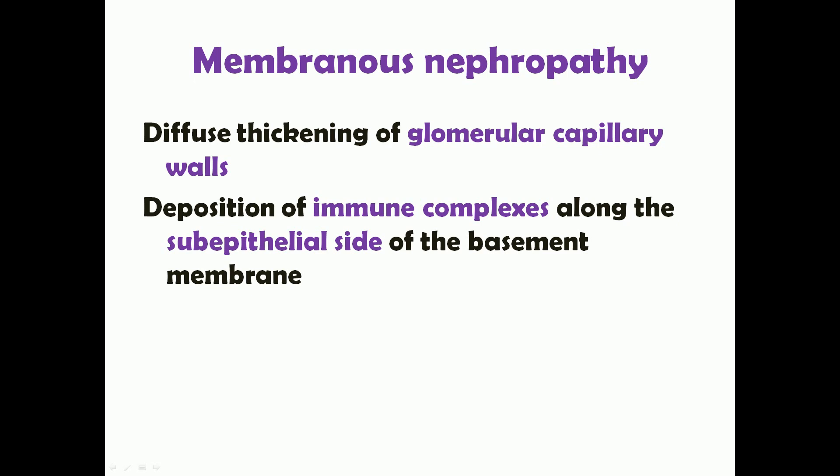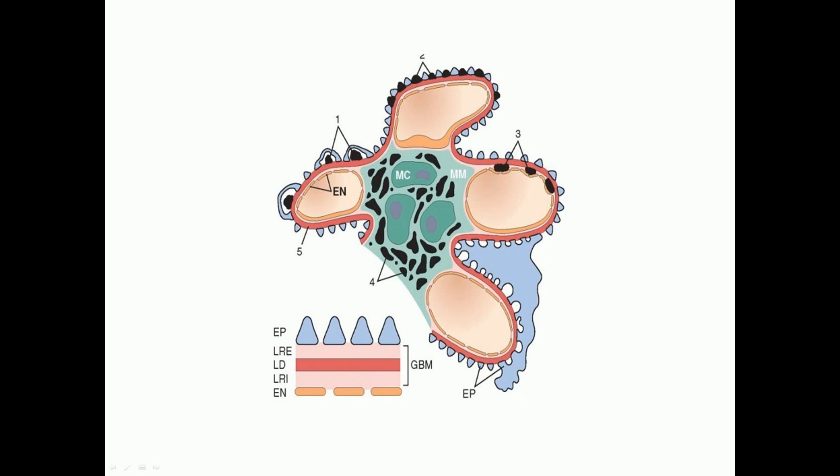Membranous nephropathy is diffuse thickening of glomerular capillary walls, caused due to deposition of immune complexes along the sub-epithelial side of the basement membrane. The glomerular capillary wall is formed by three main things: the visceral epithelium or podocytes, the glomerular basement membrane, and the capillary endothelium. There is diffuse thickening caused by deposition of immune complexes just below the epithelium — these are sub-epithelial deposits.